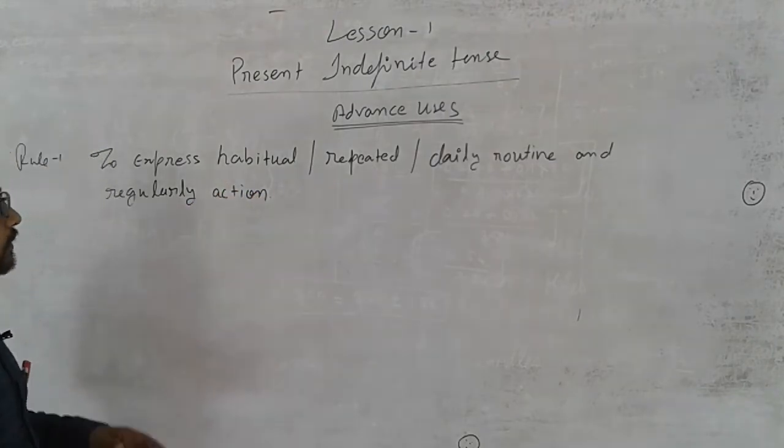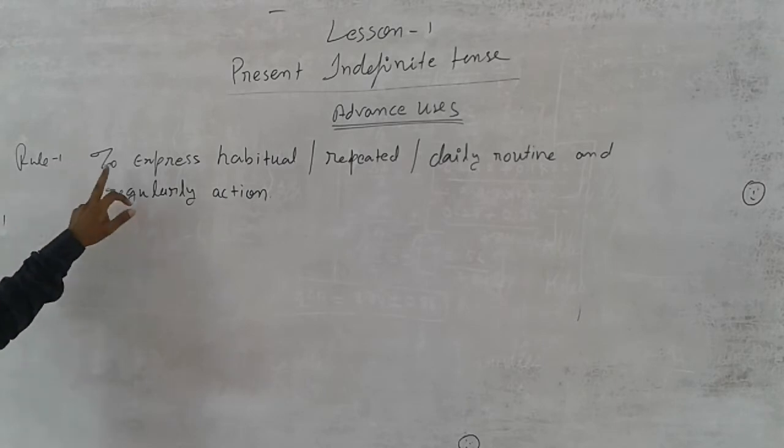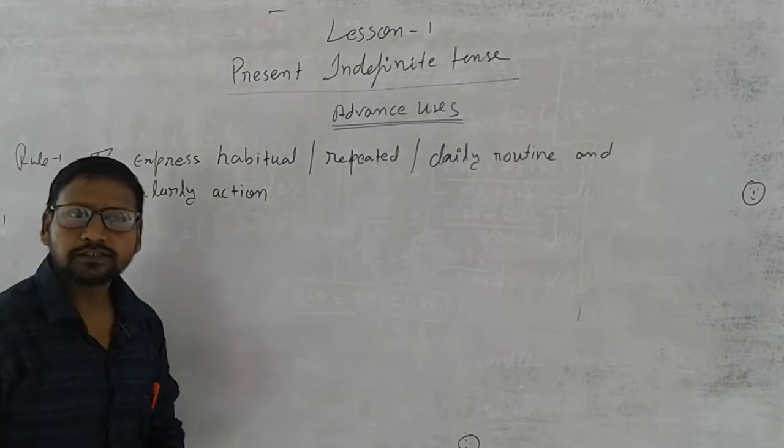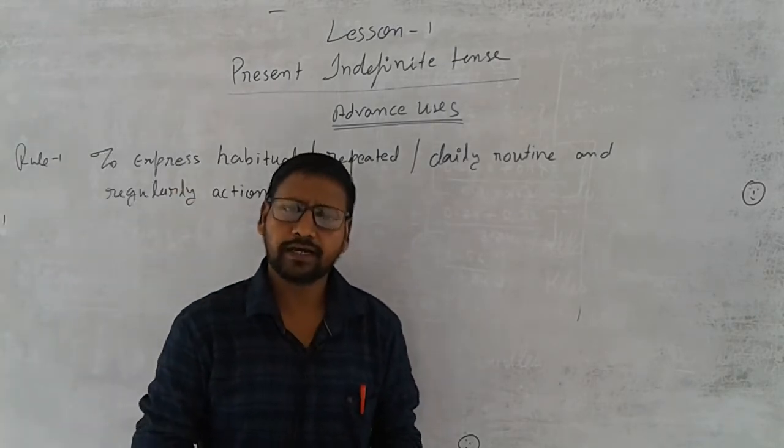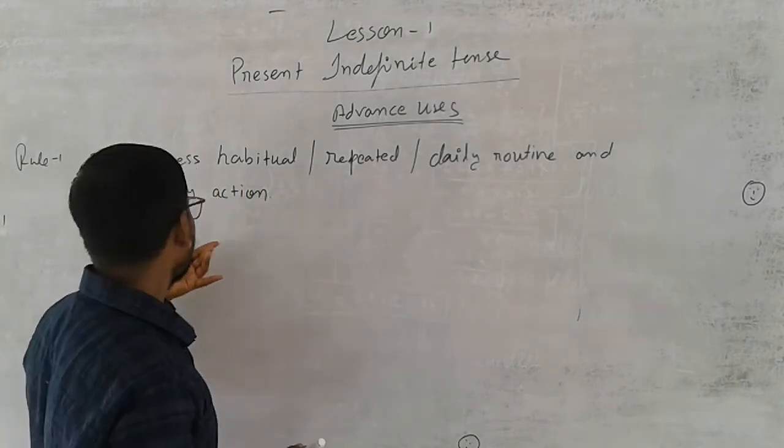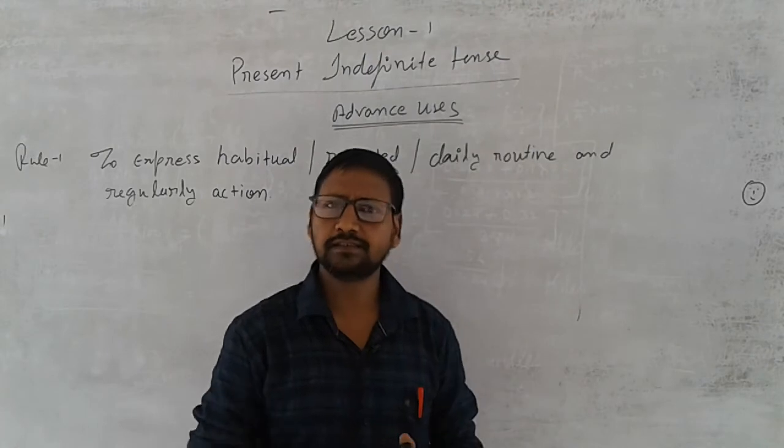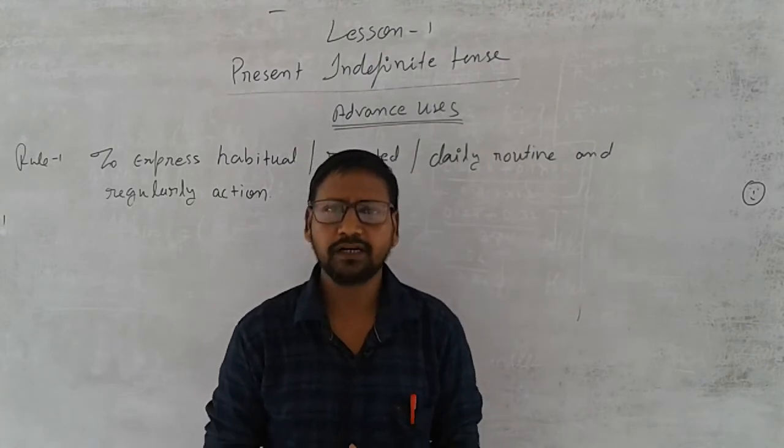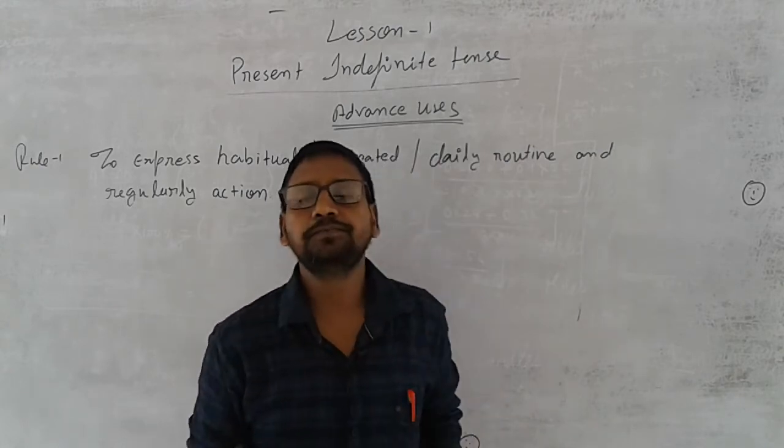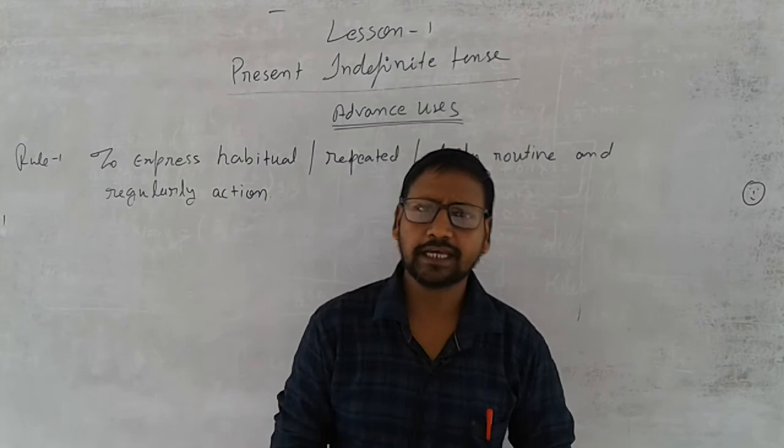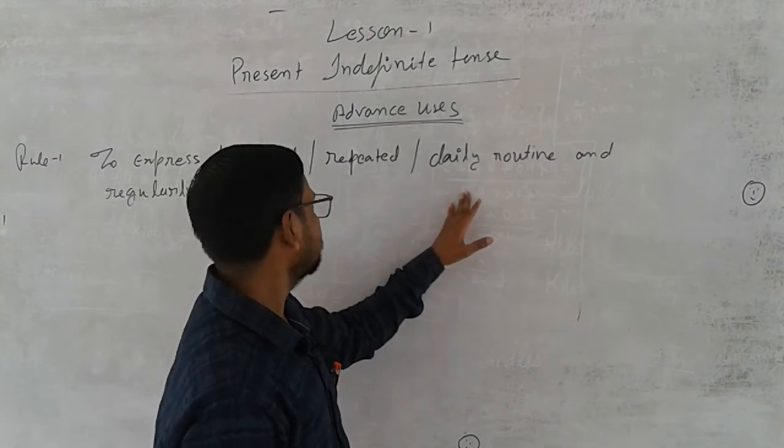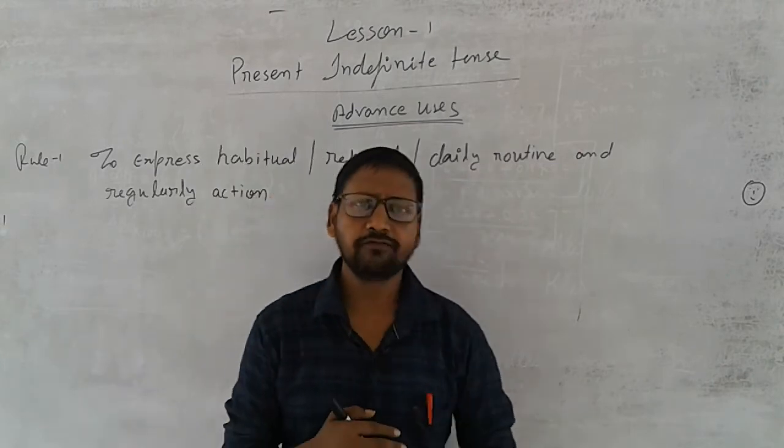So I have written the first use: to express habitual, repeated, daily routine, and regularly. In any action, if we have any habitual, repeated, daily routine, or regularity, we can use these sentences in Present Indefinite Tense. For example, 'I go to school daily' - this is my regularity. If I tell you 'I take tea in the morning time,' what is this? This is habitual, yes or not?